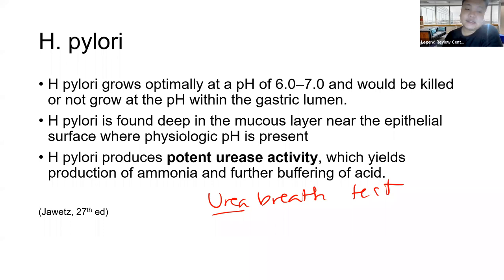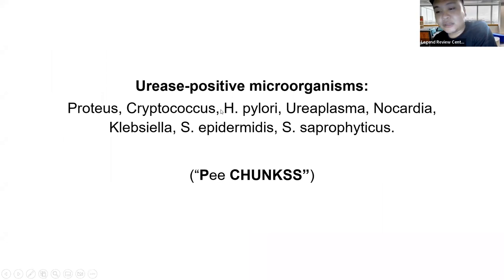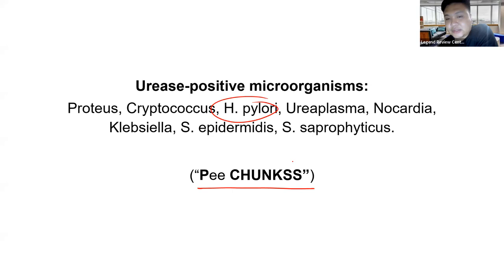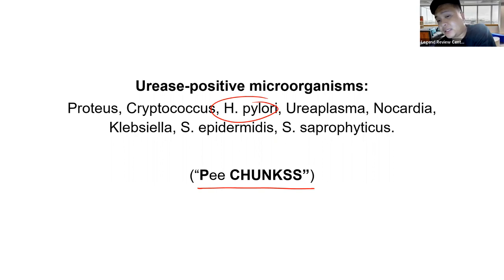Also memorize the urease-positive microorganisms. The mnemonic is P-CHUNKS: P = Proteus, C = Cryptococcus, H = H. pylori, U = Ureaplasma, N = Nocardia, K = Klebsiella, S = Staph epidermidis, S = Staph saprophyticus. These are urease-positive microorganisms — very important, because if a biochemical profile shows urease-positive, this immediately narrows down your choices.